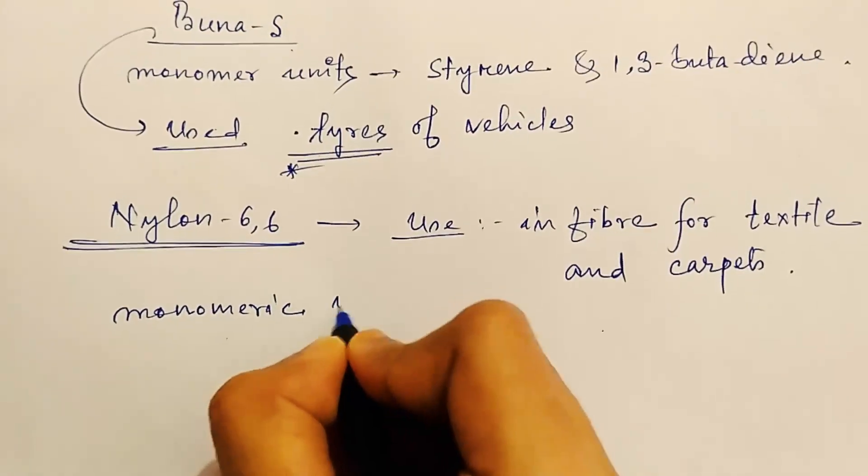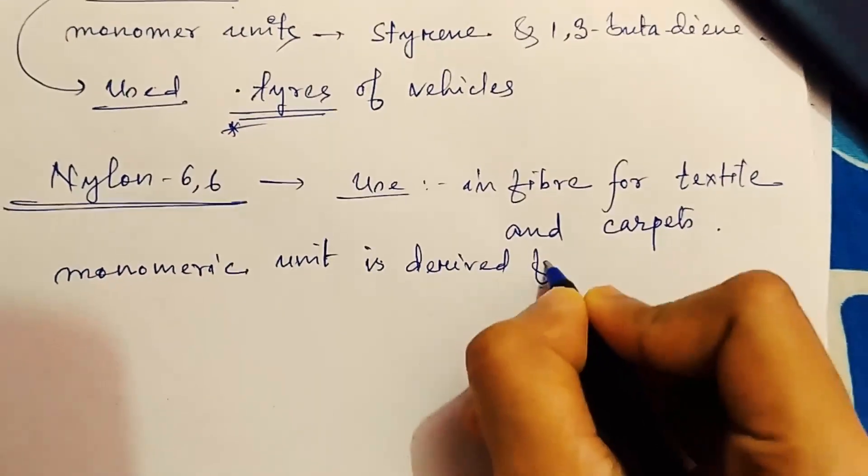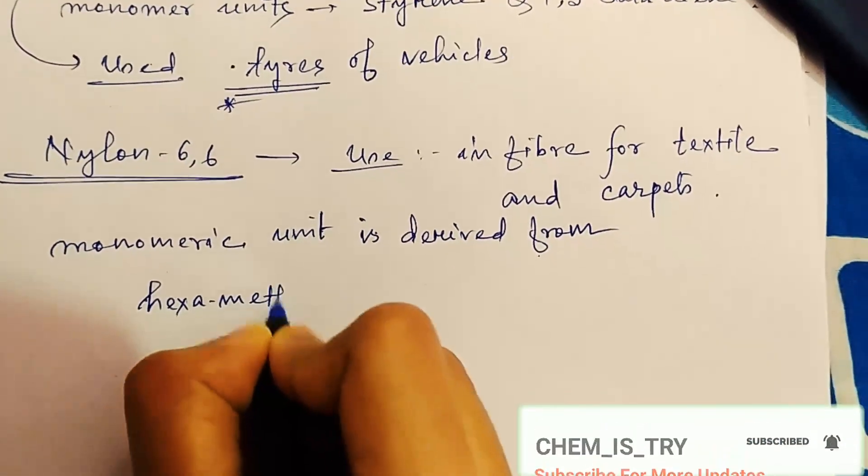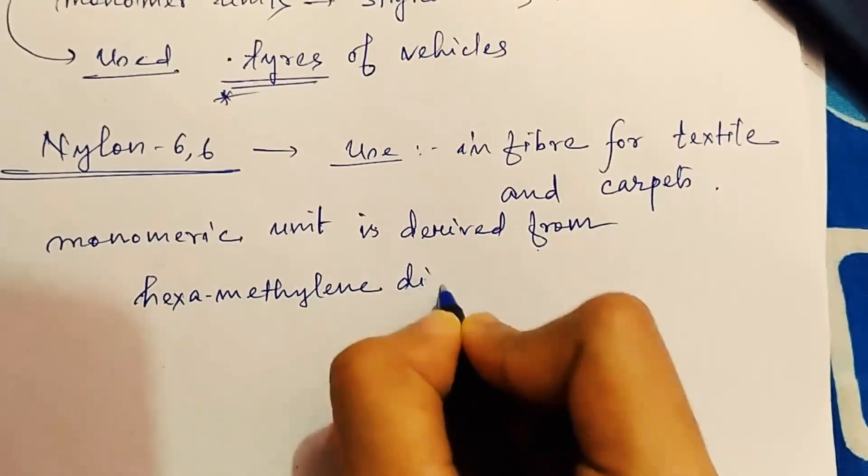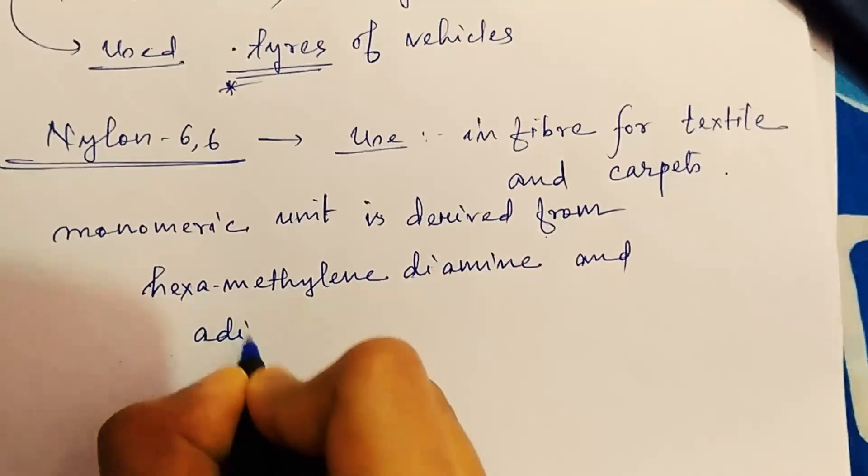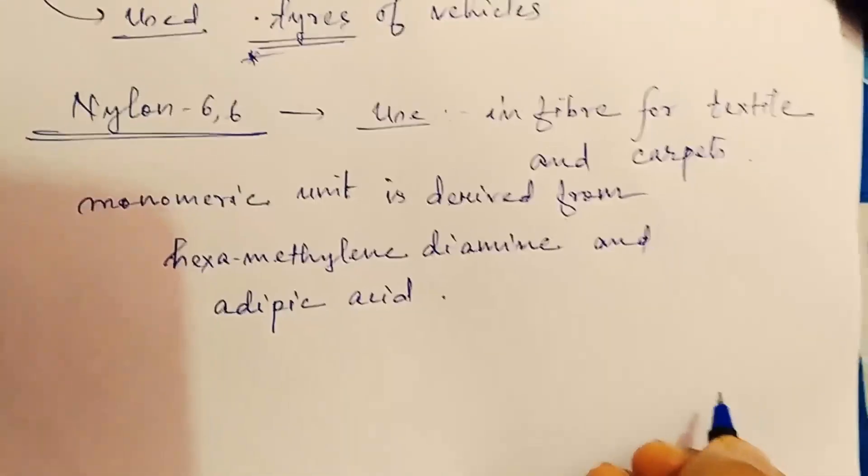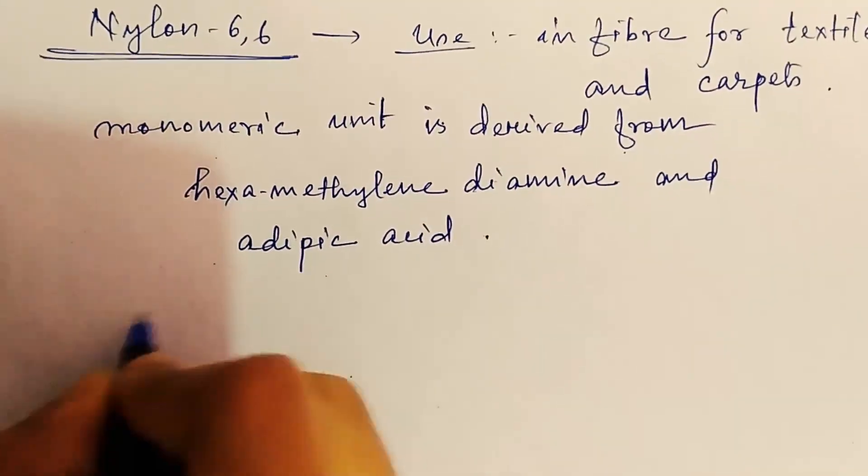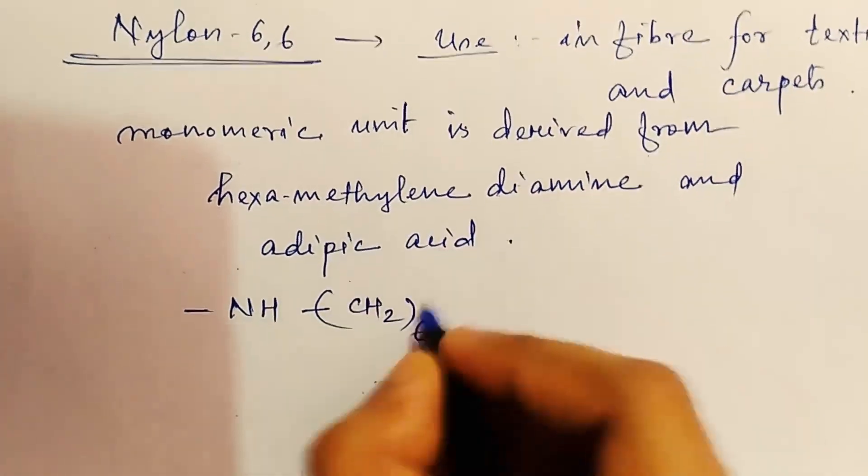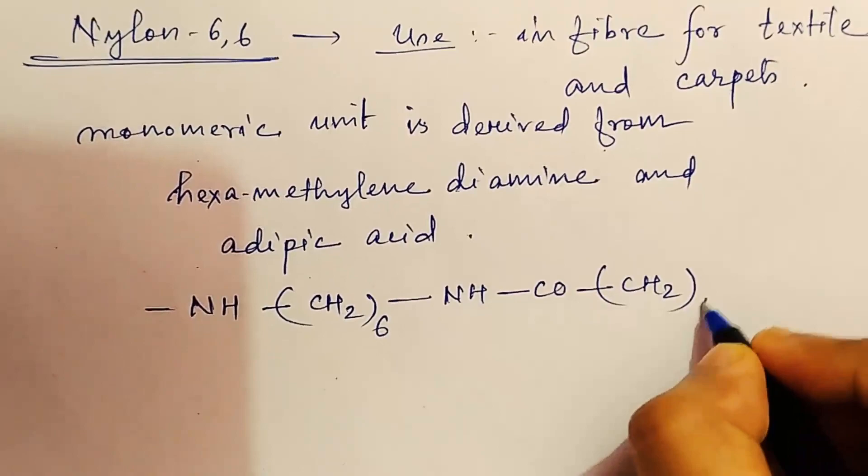And its monomeric unit is derived from hexamethylene diamine and adipic acid. And the monomeric unit is, this is the hexamethylene part, and then come adipic acid part.